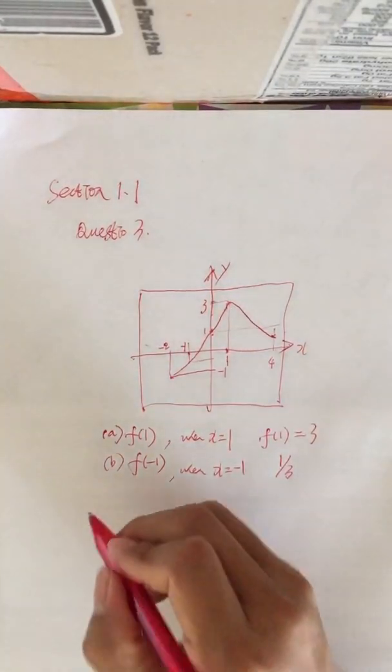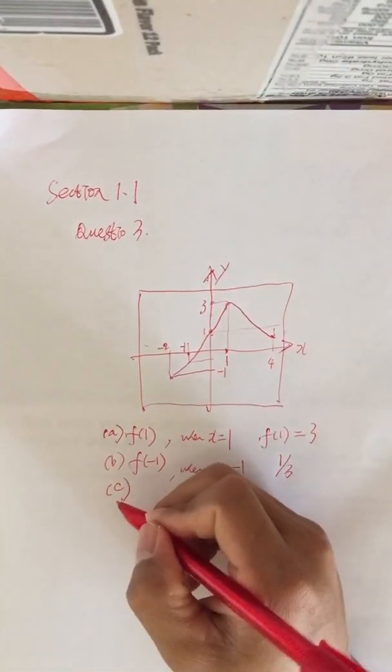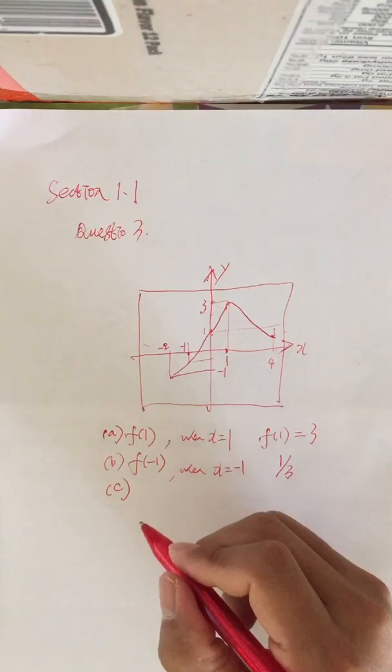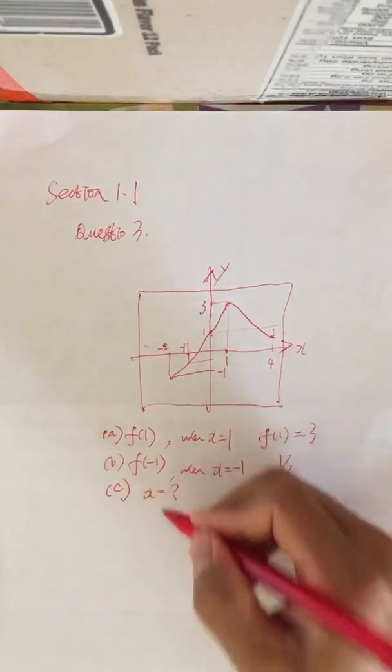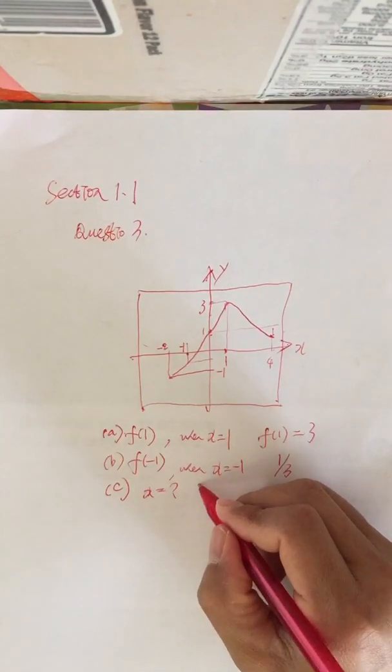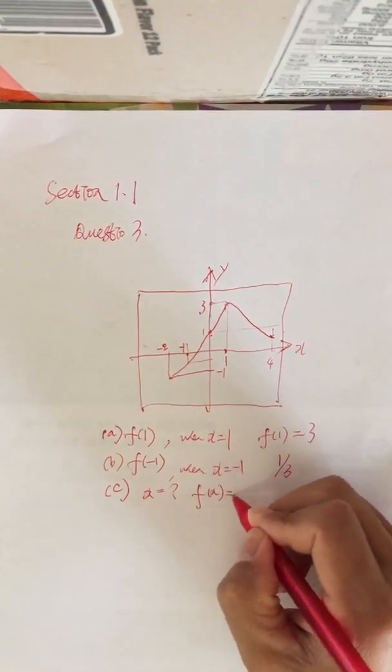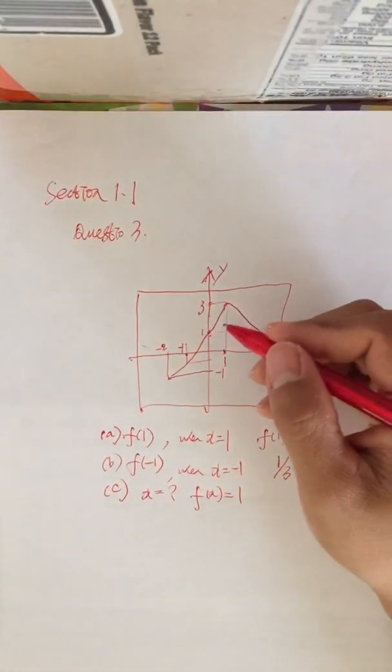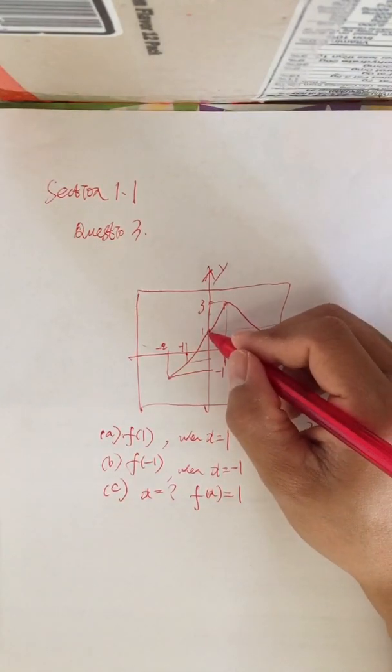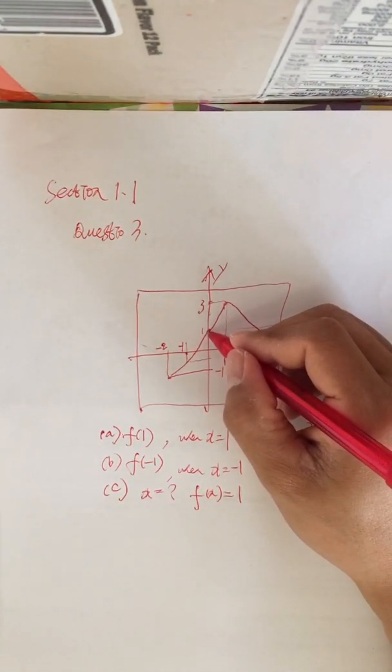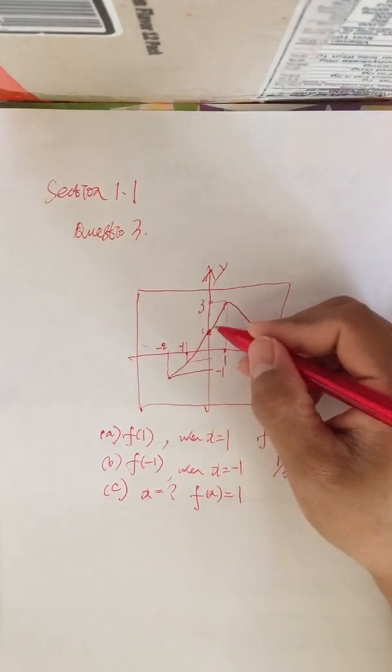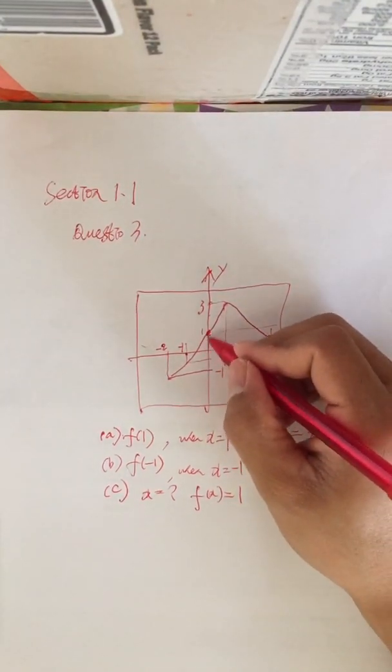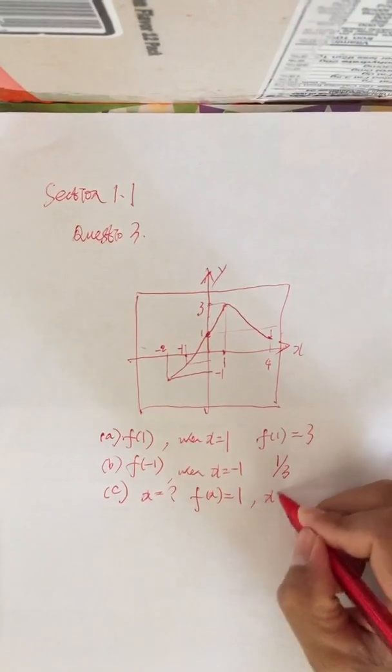Part (c): for what value of x does f(x) equal 1? We check where y equals 1 and find from the picture that x equals 0.